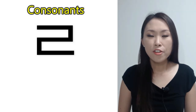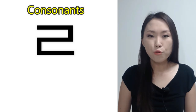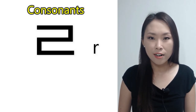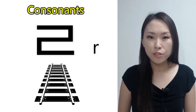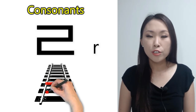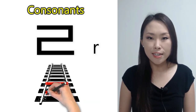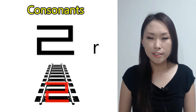The name of this consonant is ㄹ. The romanized letter for ㄹ is 'r' or 'l'. ㄹ sounds like the letter 'r' in the word 'radio'. The shape of the railroad looks like ㄹ.